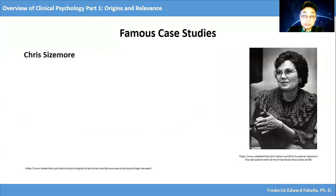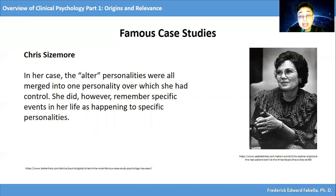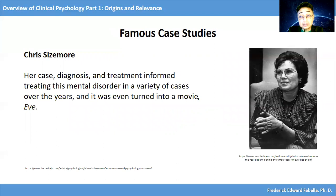Let's consider the case of Chris Sizemore. One of the most famous case studies in psychology is that of Chris Sizemore. She was one of the first people to be diagnosed with multiple personality disorder, now called dissociative identity disorder. In her case, the alter personalities were all merged into one personality over which she had control. She did, however, remember specific events in her life as happening to specific personalities. Her case, diagnosis, and treatment informed treating this mental disorder in a variety of cases over the years, and it was even turned into a movie entitled Eve.